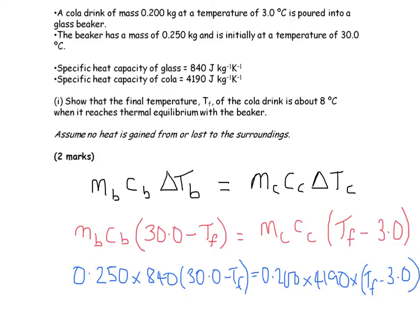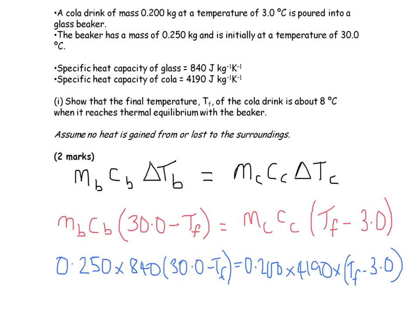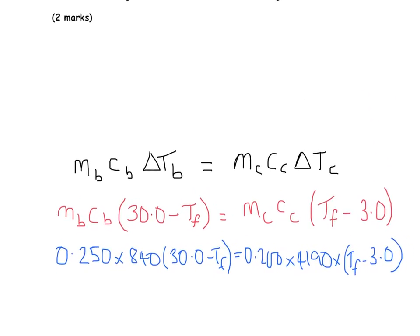So obviously we need to multiply out the brackets on each side and then you're going to need to do a rearrangement. Remember we're looking to show that it's about 8 degrees.